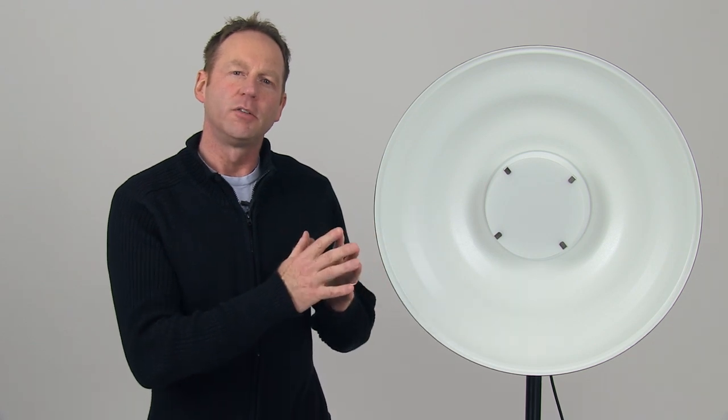This is the Mola Demi White 22-inch Beauty Dish. When you buy this stock, it comes with a perforated disc. I've bought the added opal glass diffuser and I've stacked them. Basically, it's a perforated disc with the opal glass diffuser over top, so it's a stacked configuration.